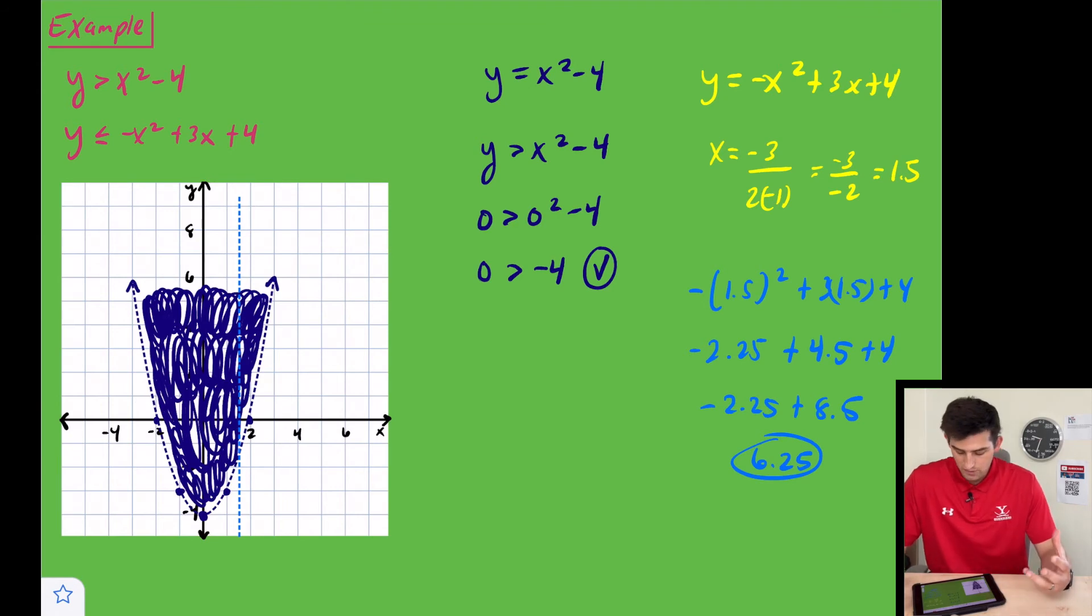Now our vertex is going to be located at 1.5, 6.25—not really ideal for graphing, but we can do it. So 6.25 would be around here. We know that our y-intercept is 4, so we're going to put a point at 4 on our y-axis. This would be 6, 5, and 4, so it would be right there. We reflect it on the other side of our axis of symmetry.